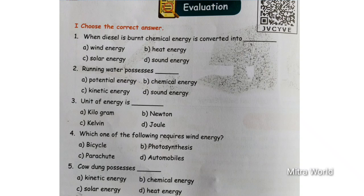Evaluation means book back exercise. Number one: Choose the correct answer. Question number one — when diesel is burnt, chemical energy is converted into dash. Option A: wind energy. Option B: heat energy. Option C: solar energy. Option D: sound energy. When diesel is burnt, chemical energy is converted into heat energy.